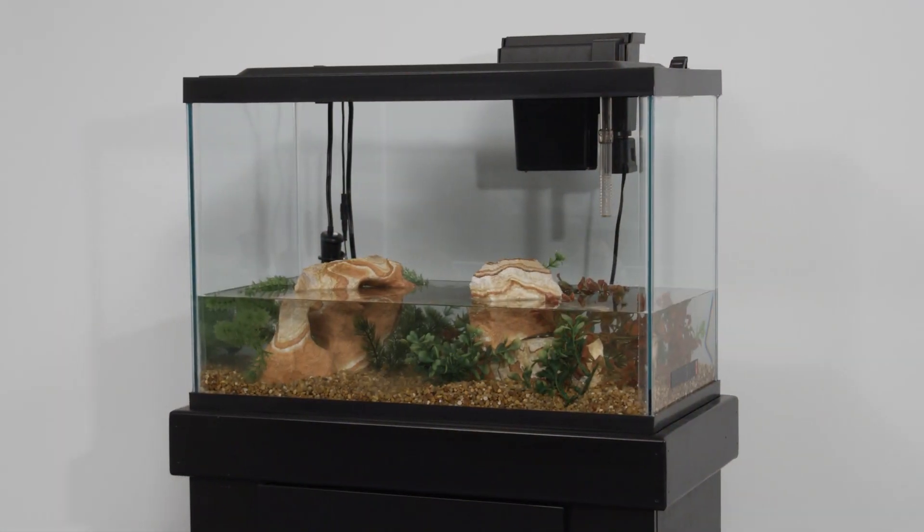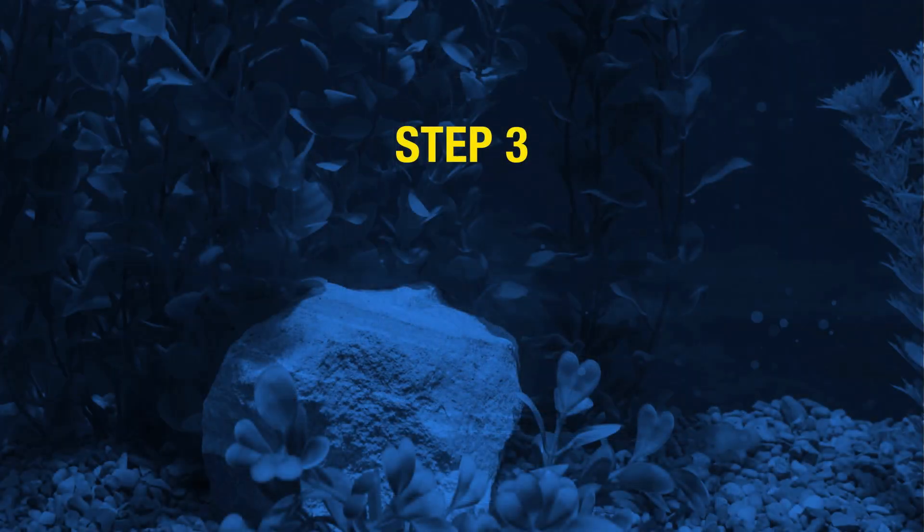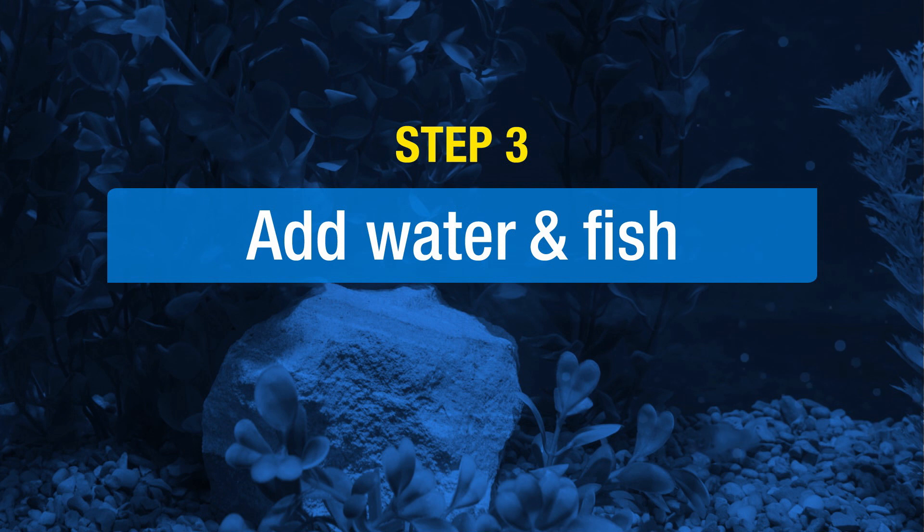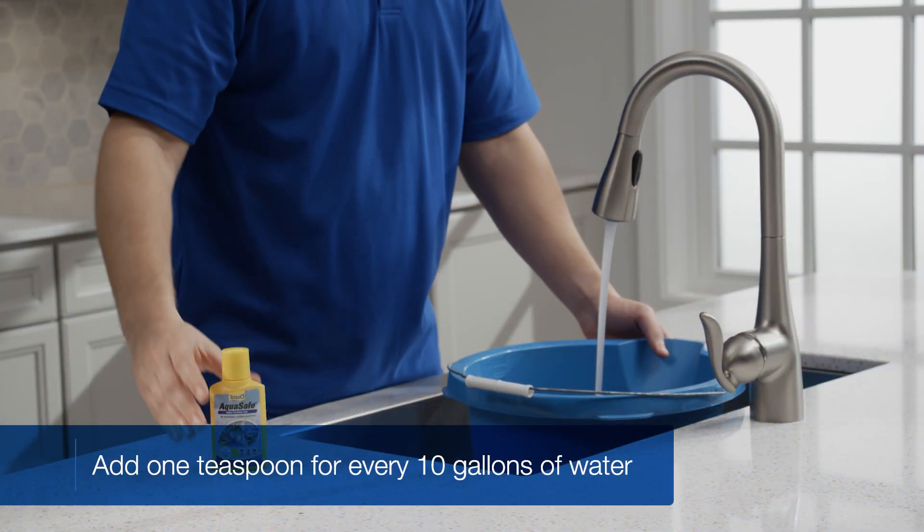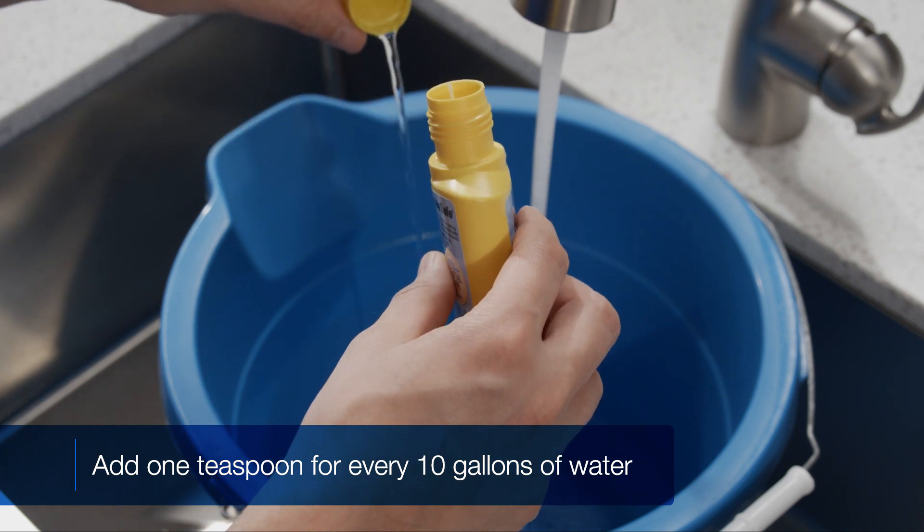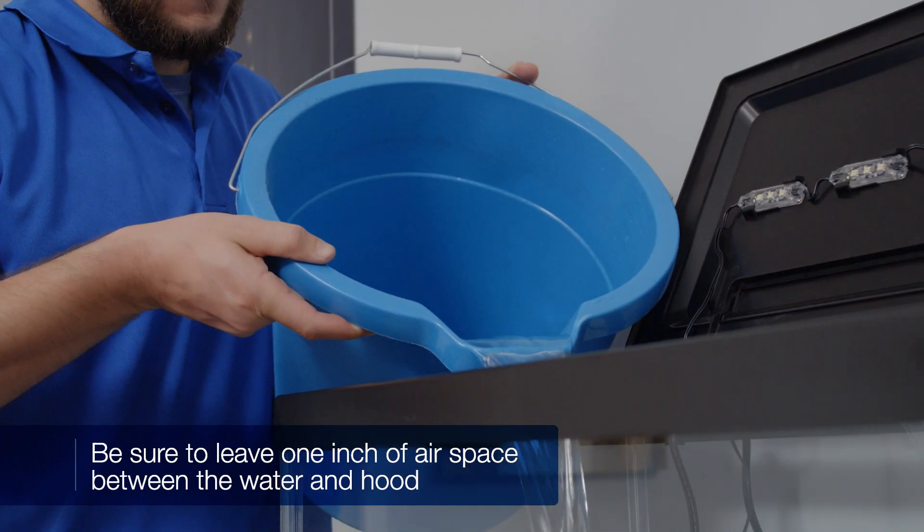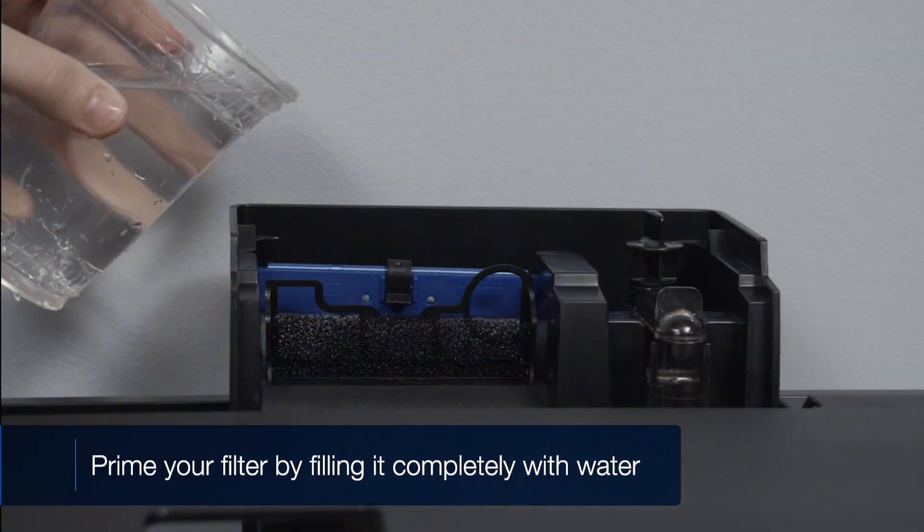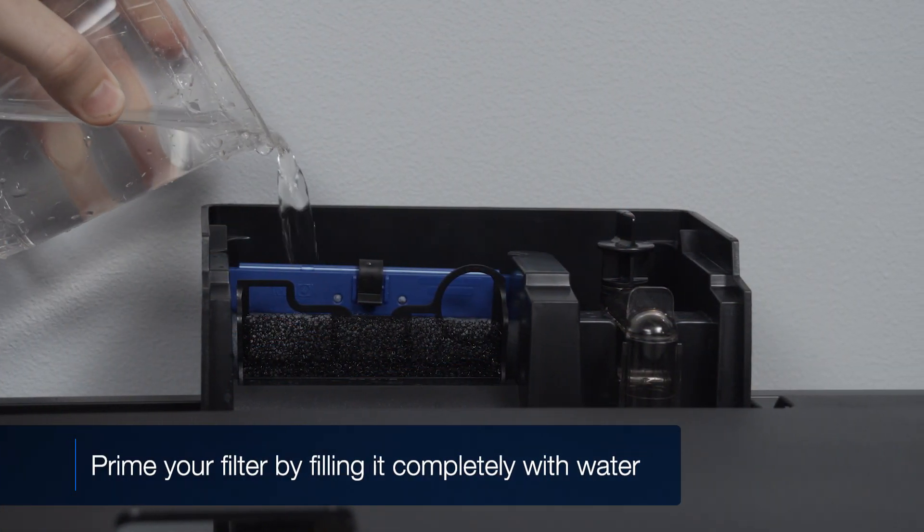You're now ready for the final step. Start by adding an aquarium conditioner, like Tetra AquaSafe, to dechlorinate your water first. After you've filled your tank, prime your filter by filling it completely with water.